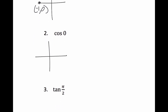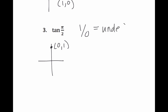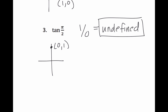Number two, cosine of 0: I know 0 is over here, that's an ordered pair of 1, 0. Cosine is equal to the x value, so cosine of 0 is 1. And lastly, tangent of pi over 2: I know pi over 2 or 90 degrees is on the positive y-axis. That's an ordered pair of 0, 1. Tangent is y over x. Now, this one looks strange because I'm dividing by zero — I know I can't divide by zero, so this is called undefined. Remember, if we have zero in the numerator, we would simplify that to zero. Zero in the denominator becomes undefined.